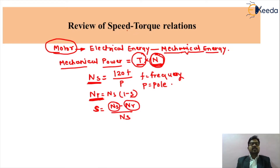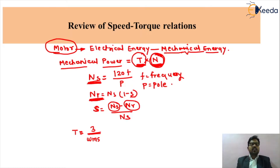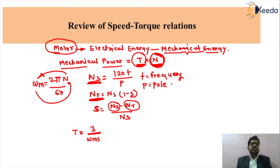The speed is considered in RPM. To find the torque value, we use the fundamental torque equation already derived: T = (3 / ω_ms) × [V² × (R'r/S)] / [(Rs + R'r/S)² + (Xs + X'r)²], where ω_ms relates to speed via ω_m = 2πN/60.